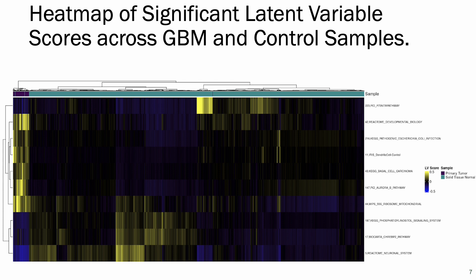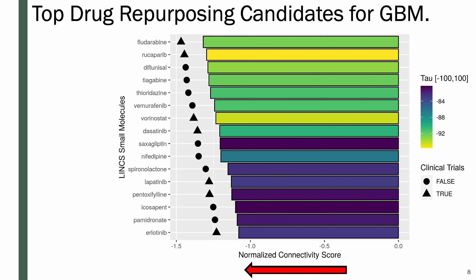Once the significant latent variables were identified, they were used to identify genes for the disease signature and applied to the signature reversion methodology. This figure shows the normalized connectivity score for the top candidates for GBM. The more negative the normalized connectivity score, the more inverse the signature of the drug. Also shown is the tau value, which describes the unique overlap between the disease signature and the drug signature — the more unique this overlap, the more it indicates specific perturbation of the disease signature while reducing the likelihood of adverse events.